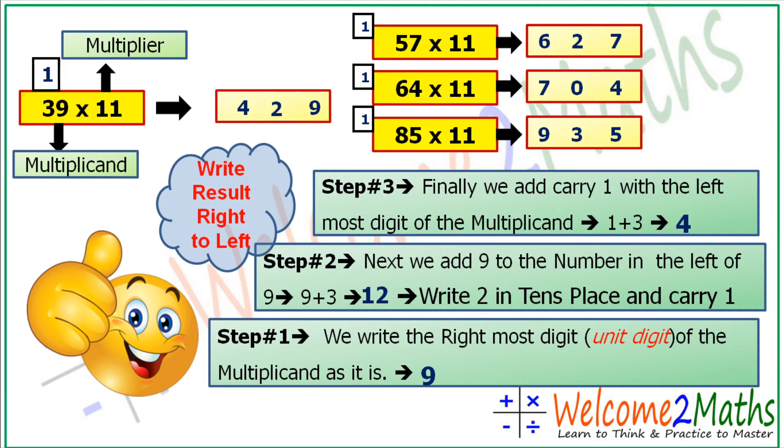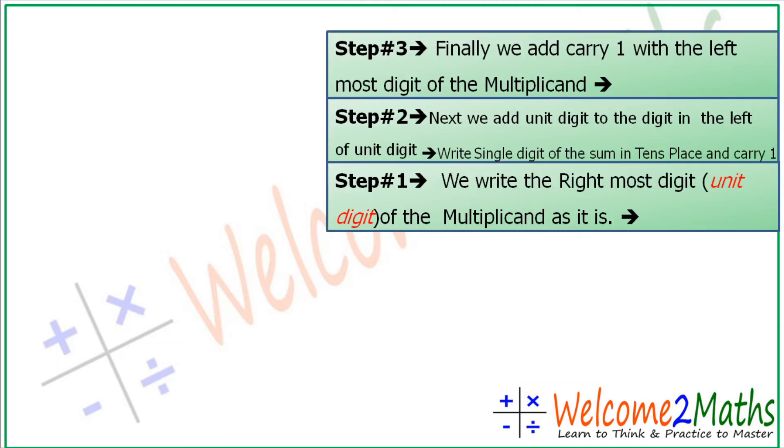So how is it? It's so easy now. So let's solve some questions just like the speed of a rocket. Take out your pen and copy and do some questions. So 1, 2, 3, and start. At first, 87 into 11. First 7, then 7 plus 8 is 15, so let's write 5 here, and 1 plus 8 is 9.